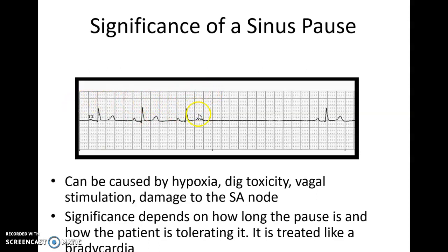To find out how long the pause is, I count the large boxes — it looks like almost 16 large boxes, so about a 3.2-second pause. So instead of saying I have a sinus pause — which only tells me I have a gap in my rhythm — I need to look at the underlying rhythm. I have a sinus rhythm at 60 with a sinus pause.